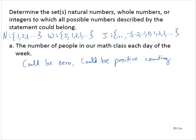So which sets include those? Now, since it could be 0, it could not be a natural number. So we would have to exclude the natural numbers.